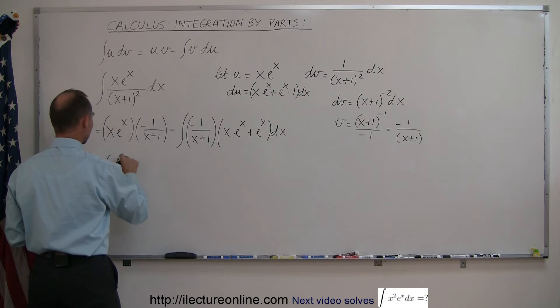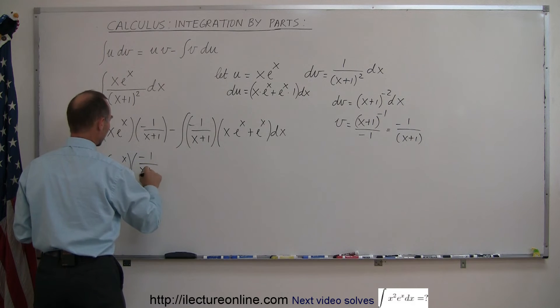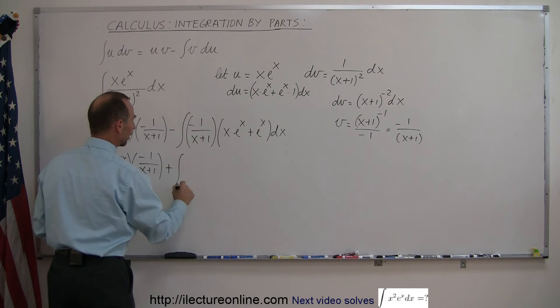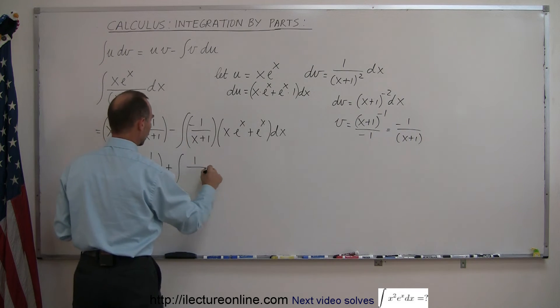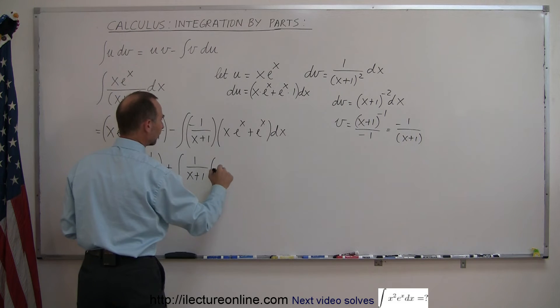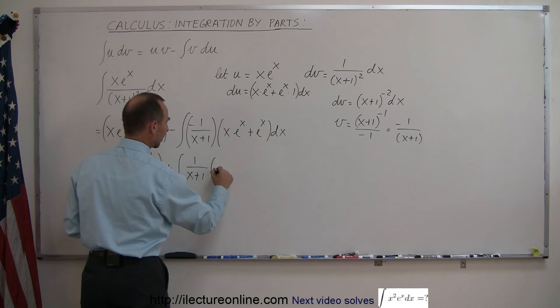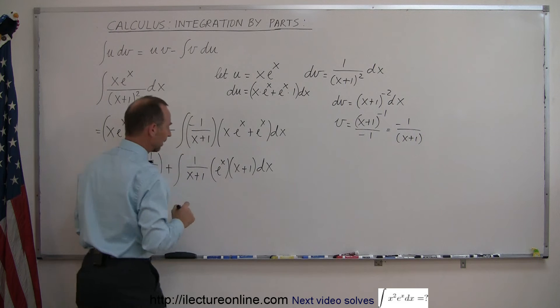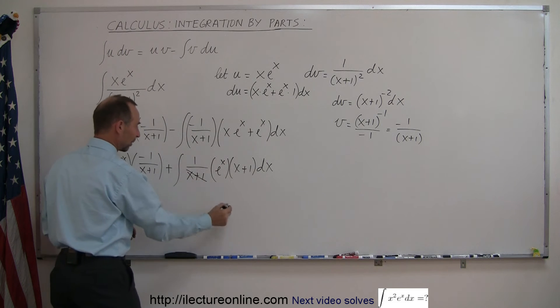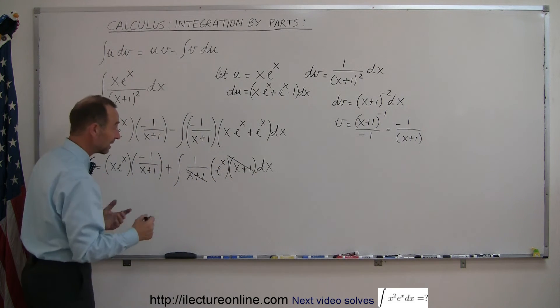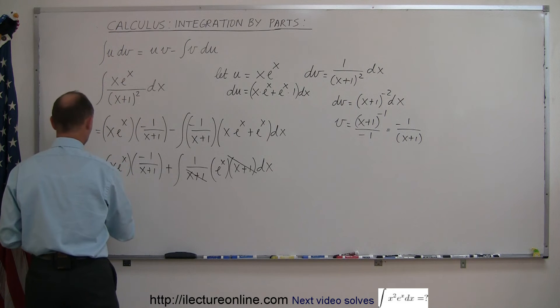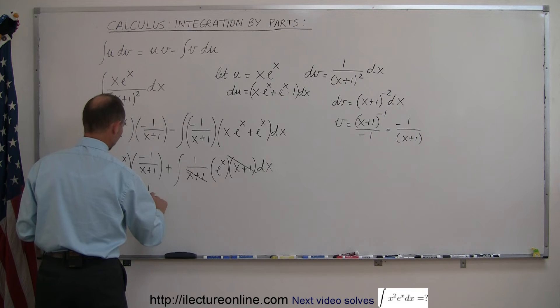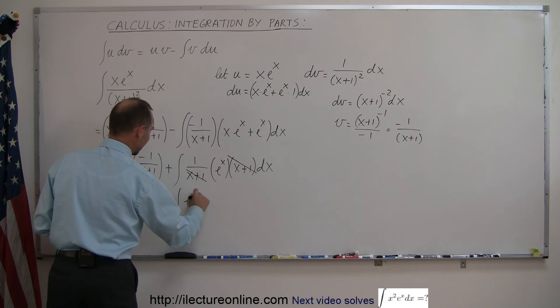So we have x e to the x times negative 1 over x plus 1 and then the minus times the minus becomes a plus, the integral of 1 over x plus 1 times when I factor out an e to the x and I get that and I'm left with an x plus 1 times dx. And notice that this x plus 1 will cancel out with this x plus 1 and now we have an e to the x left there, so this becomes x e to the x times minus 1 over x plus 1 plus the integral of e to the x dx.